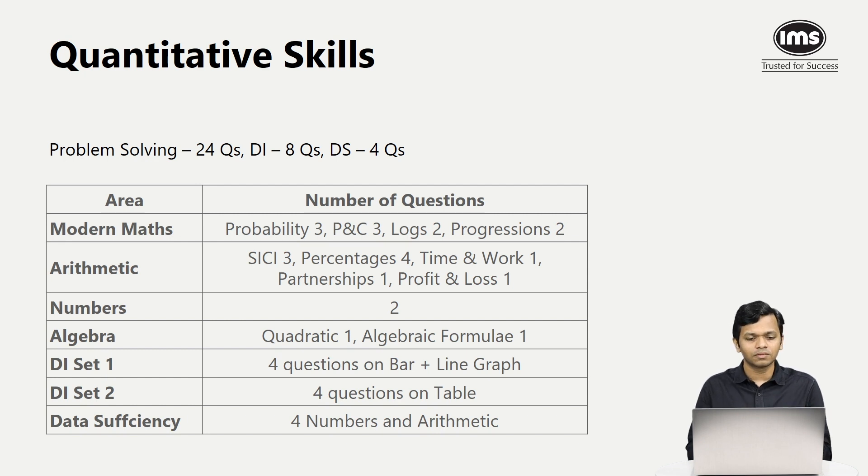From modern math, there were three questions on probability, three on P&C, logarithms two questions, and two questions from arithmetic and geometric progressions. Overall, the number of questions from this area was the largest. Modern math had a total of 10 questions and the questions were time consuming. Overall, if you look at the quantitative skills section, the difficulty was slightly higher compared to the previous year. It was a little lengthy, rather than saying the questions were actually difficult, because the questions demanded a lot of calculations.